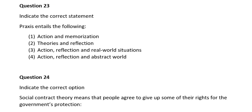Question twenty-three. Indicate the correct statement. Kolb's experiential learning cycle entails the following: number one, action and memorization; number two, theories and reflection; number three, action, reflection, and real-world situations; number four, action, reflection, and abstract world. The correct answer is number three: action, reflection, and real-world situations.